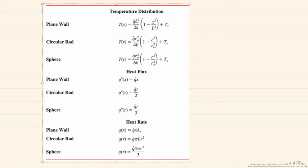So this table shows temperature distributions, heat fluxes, and heat rates for equations that include generation. So we can find the temperature anywhere within the generating object.